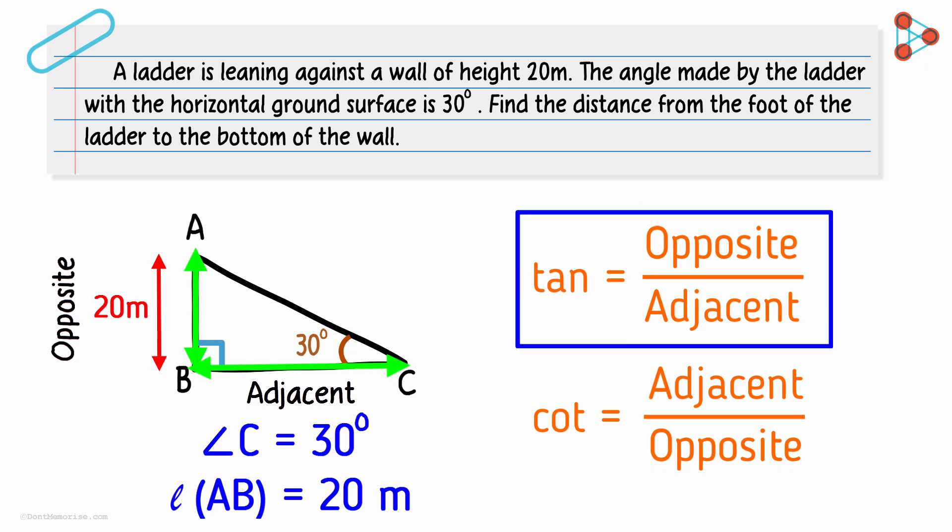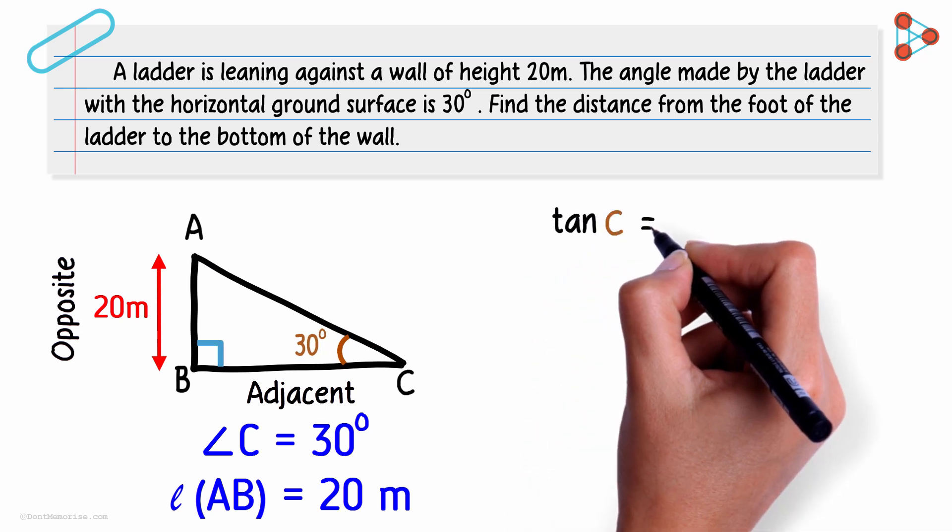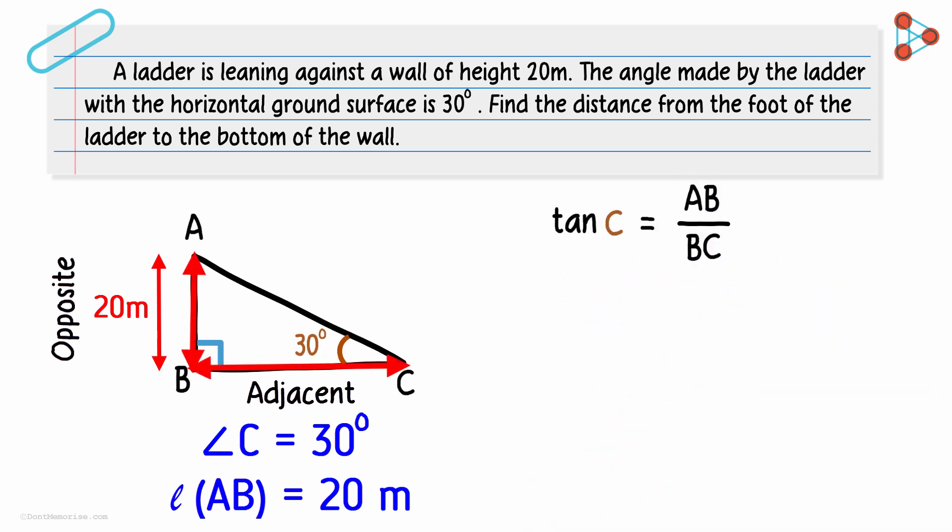Let's go with tan here. We see that tan C is AB over BC. Now all we need to do is substitute the given parameters. What is tan of 30 degrees? If we remember from this table, tan 30 is 1 over root 3.